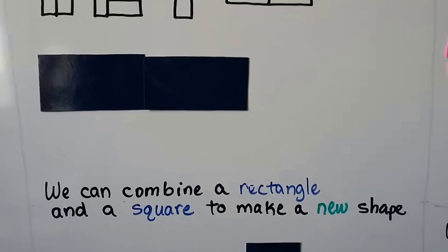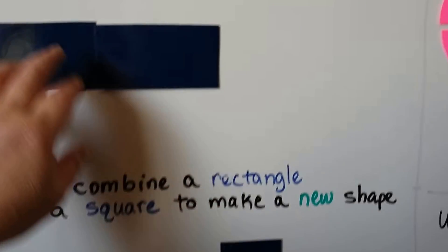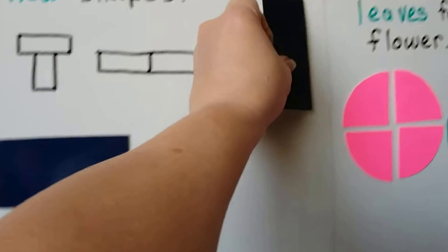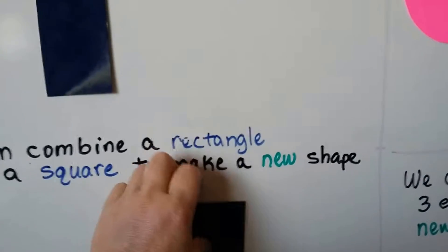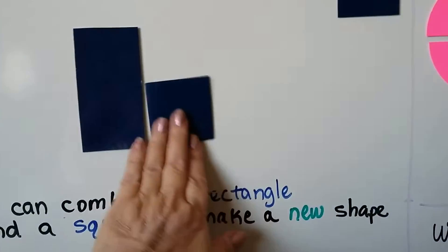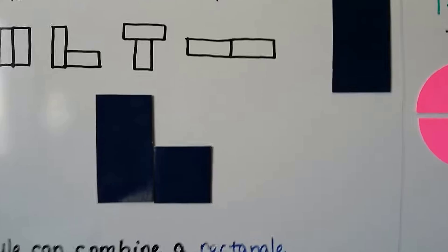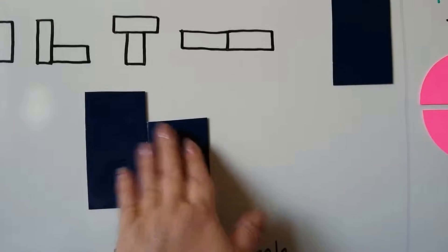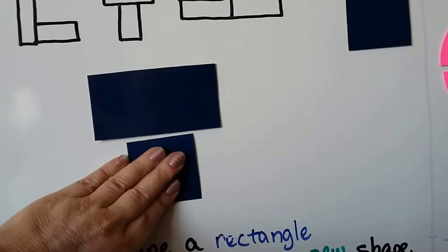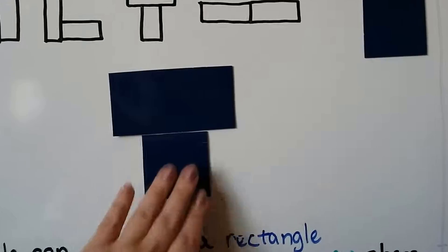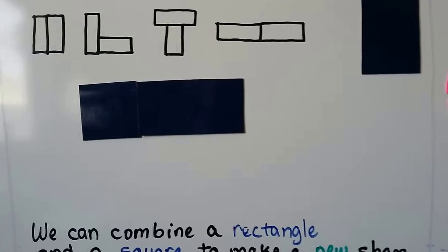We can combine a rectangle and a square to make a new shape. We could take a rectangle and a square and put them together like this and make an L. We could put it in the middle to make a short fat T, or put it at the end to make a longer rectangle.